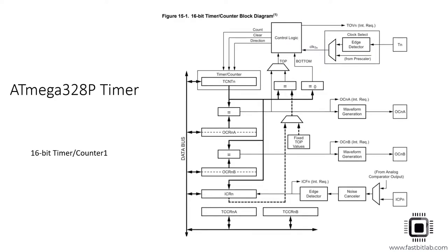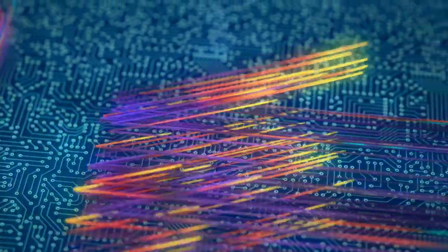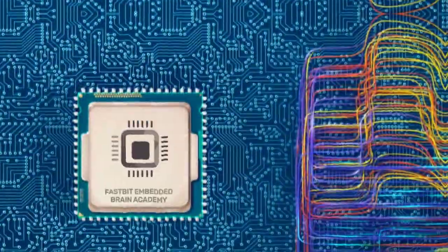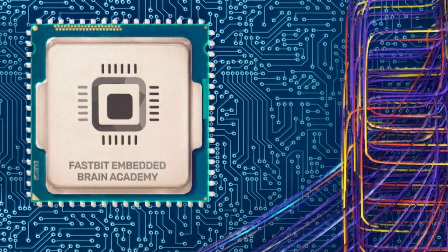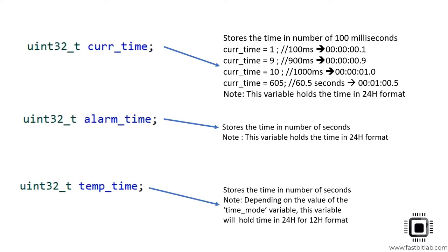Welcome back to the lecture. In this lecture let's understand the ATmega328P microcontroller's timer, because we will be using the timer ISR to track the time in our application. We already have these variables in our main structure, and the current_time variable stores the time in number of 100 milliseconds. That means this variable will be incremented every 100 milliseconds by the timer ISR.